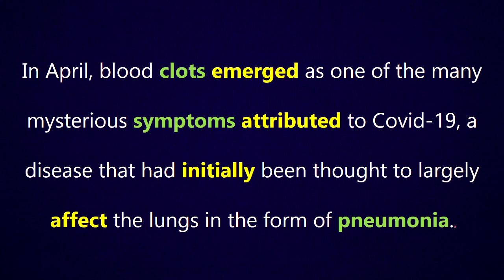Since it's a statement, we expect subject-verb or subject-verb-object. The phrase 'In April' followed by a comma is extra information. Looking at the main clause, 'blood clots emerged' — the word 'emerged' has the -ed ending, which is usually a verb ending, and it comes after the words 'blood clots.' That makes it the verb, and 'blood clots' the subject. By looking at the ending and the position in the sentence, we can tell that 'emerged' is a verb.